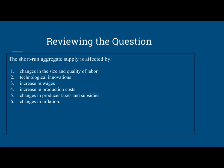The six factors are: 1. Changes in the size and quality of labor. 2. Technological innovations. 3. Increase or decrease in wages. 4. Increase or decrease in production cost. 5. Changes in producer taxes and subsidies. 6. Changes in inflation.